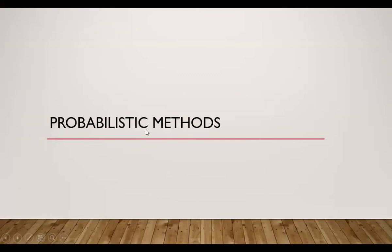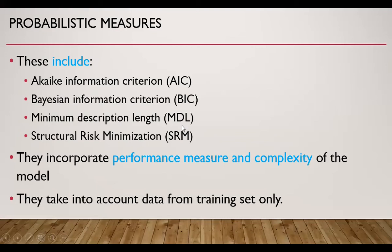Then we come to probabilistic methods. These include AIC, BIC, MDL, and SRM. AIC stands for Akaike information criteria. BIC stands for Bayesian information criteria. MDL stands for minimum description length, and SRM stands for structural risk minimization. They incorporate a performance measure as well as the complexity of the model. They take into account data from the training set only and consider in-sample error.